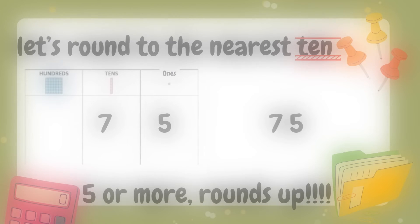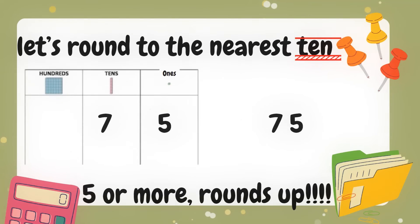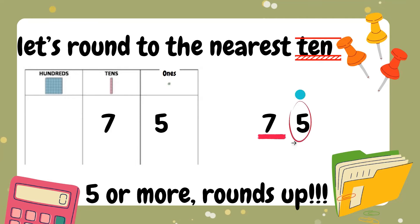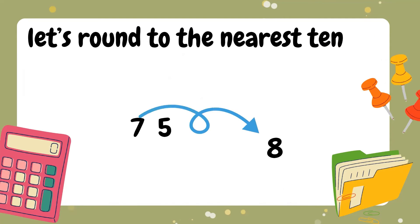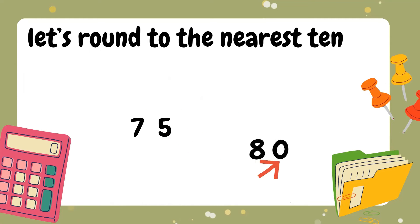Now let's see this example: seventy-five. Seven is in the tens place, five is in the ones place. Again, I am going to round to the nearest ten, so I am going to underline the seven because seven is in the tens place. We're going to knock next door. Five or more, let it soar — round up. Seven becomes eight, and the five will become a zero. So 75 rounded to the nearest ten will be 80.